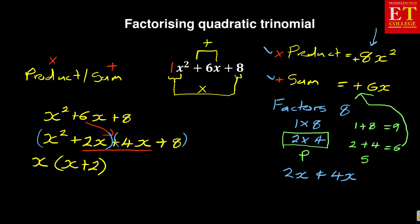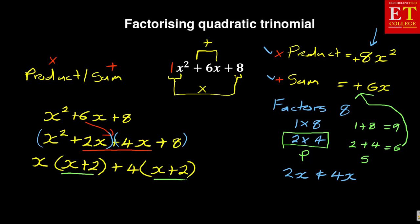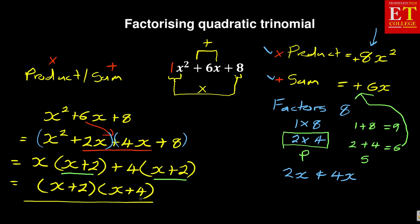Now looking at the last two terms: what is common between four x and eight? The highest common factor is four. Four into four x is x, and four into eight is two — giving four(x + 2). These two brackets must always match: x plus two and x plus two. So they match, meaning we're in the right direction. Inside the bracket we have x plus two, and outside we have x plus four. So we have factorized using the product sum method: the answer is (x + 2)(x + 4).